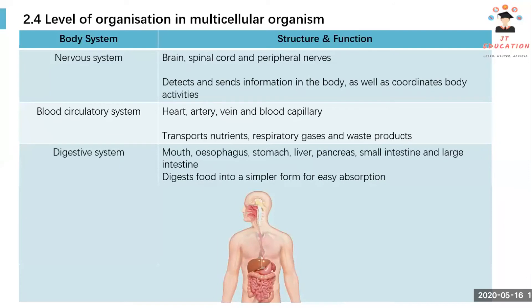The digestive system — in Chinese called xiao-hua-xi-tong — contains the mouth, esophagus, stomach, liver, pancreas, small intestine, and large intestine. All these organs are responsible for digesting food into a simpler form for easy absorption.